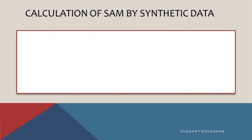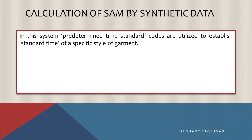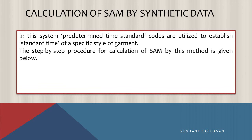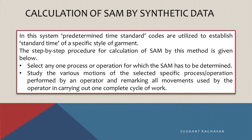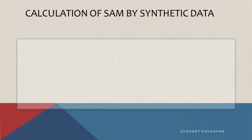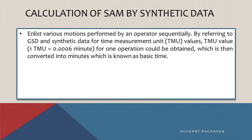Calculation of SAM by synthetic data. In this system, predetermined time standard codes are utilized to establish the standard time of a specific style of garment. The step-by-step procedure is as follows: select any one process or operation for which the SAM has to be determined. Study the various motions of the selected specific process performed by an operator, remarking all movements used by the operator in carrying out one complete cycle of work. Enlist various motions performed by the operator sequentially by referring to GSD and synthetic data for Time Measurement Unit (TMU) values.